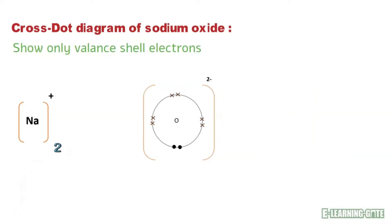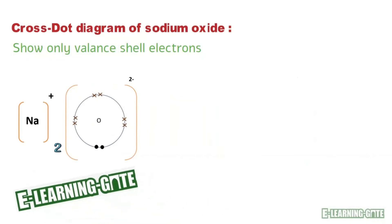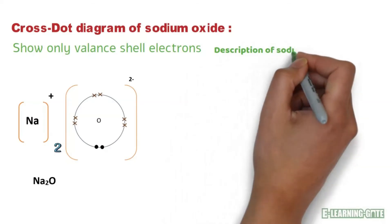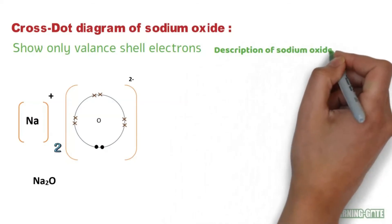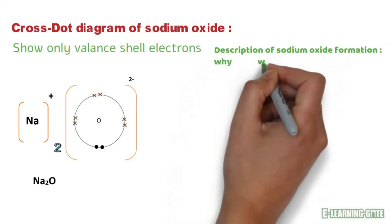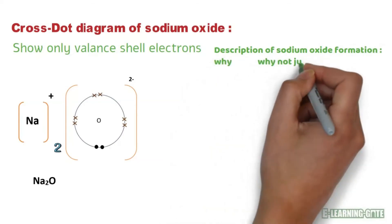The chemical formula is Na2O. We can explain that why the formula is Na2O, why not only NaO.